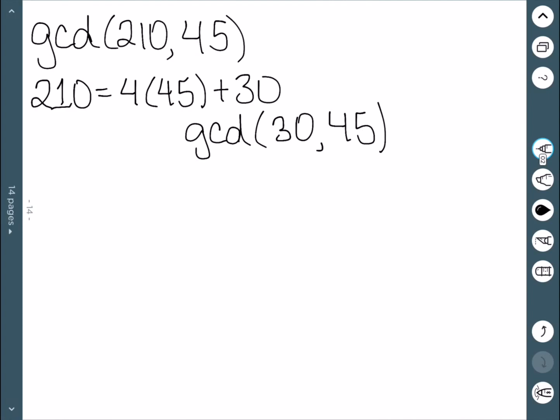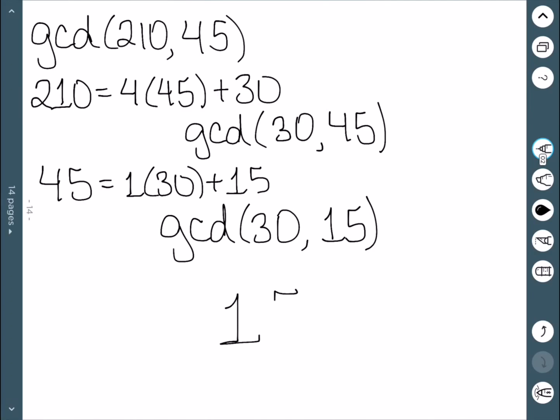At this point, you may be able to figure this out, but we're going to take it another step. 30 can go into 45 once, with 15 left over. So now my GCD, I replace the larger of the two, which is now 45, with my new remainder. And 15 actually goes directly into 30. So therefore, I can easily determine that my GCD here is 15.